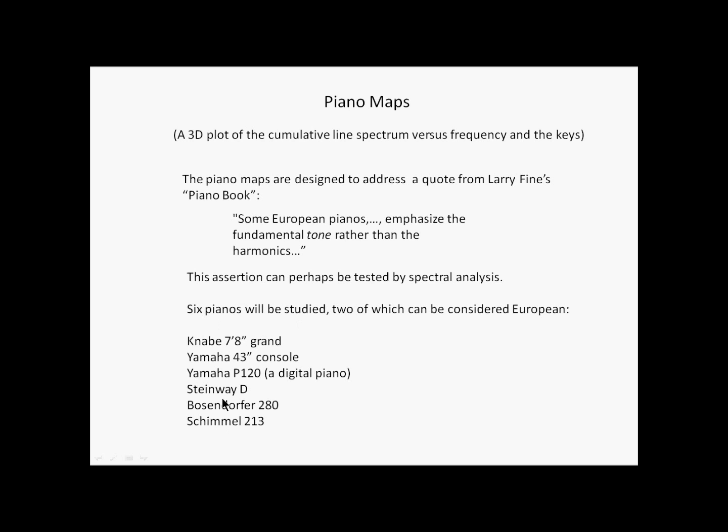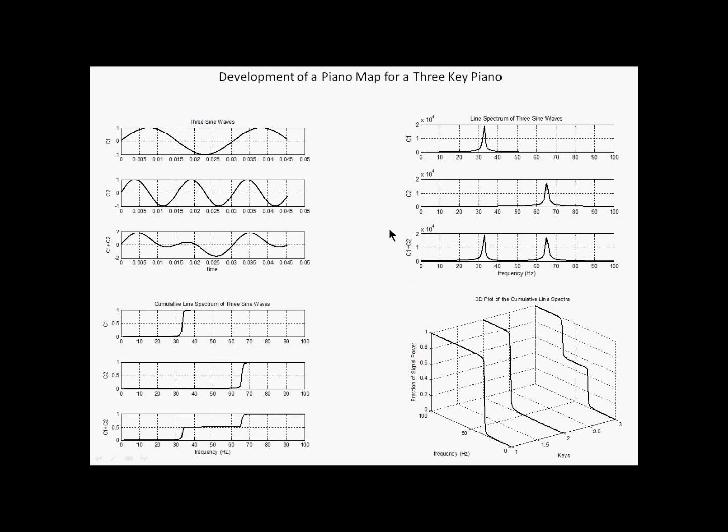I'm going to use six pianos, two of which, the Bosendorfer and the Schimmel, are European. Now I'm going to use the cumulative line spectrum in 3D to illustrate this piano map. It's perhaps a foreign concept to some of you, so I'm going to have to develop it here.